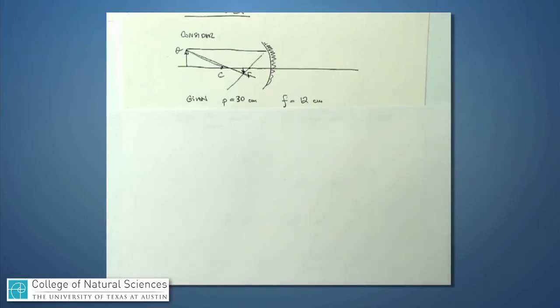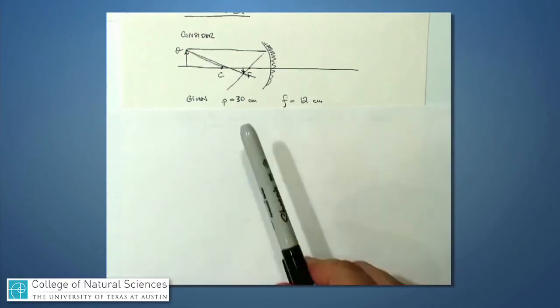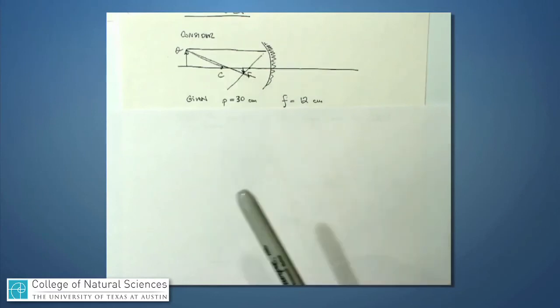Maybe I've, again, not drawn this perfectly to scale, but it should be about 2 thirds the size of the original object. So these calculations teach us quite a bit, because they teach us where the image is. It's in front of the mirror by, I believe we just calculated, 20 centimeters. And it teaches us how big the image is. It's about 2 thirds as big. And it teaches us its orientation. It's flipped relative to the original object itself.